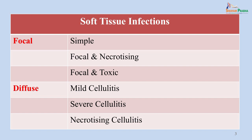Soft tissue infections can be classified into focal and diffuse. Focal infections are simple infections like boils and sty which we encounter in day-to-day life. Focal infections with a necrotizing focus could be focal and necrotizing, and if there is a toxin element added, they become focal and toxic. Diffuse infections can be mild cellulitis, severe cellulitis and necrotizing cellulitis.